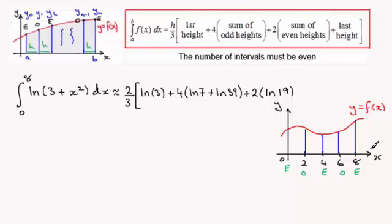And then we've got plus the last height. That's when x is 8. So 8 squared is 64 plus another 3 is 67. So you've got plus the natural log of 67.